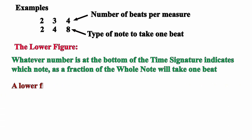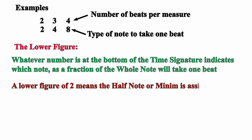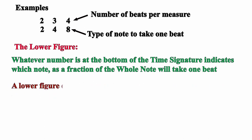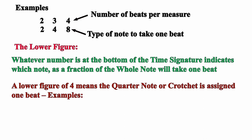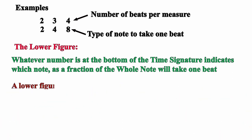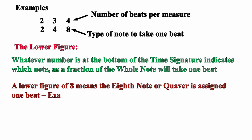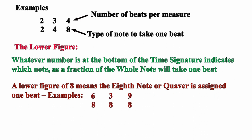A lower figure of 2 means the half note or minim is assigned one beat — for example, 4 2 or 3 2. A lower figure of 4 means the quarter note or crotchet is assigned one beat — for example, 4 4 or 3 4. A lower figure of 8 means the eighth note or quaver is assigned one beat — for example, 6 8, 3 8, or 9 8.